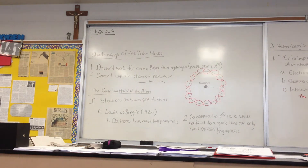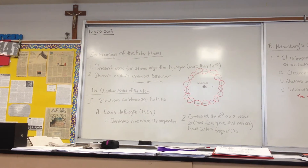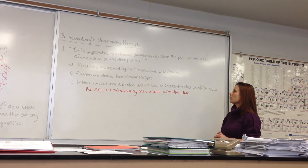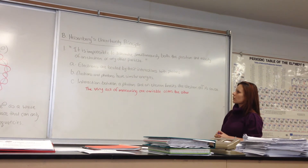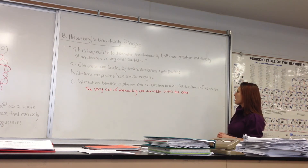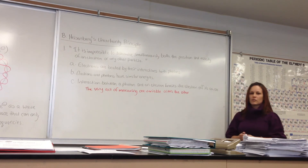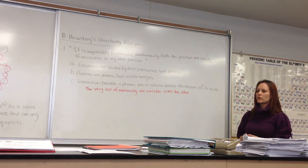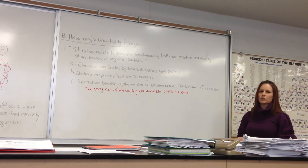The second scientist on quantum theory was Heisenberg. Heisenberg has a very famous uncertainty principle. His famous quote is that it is impossible to determine simultaneously both the position and velocity of an electron or any other particle. Electrons are located by their interactions with photons. Electrons and photons have similar energies, and interactions between a photon and an electron knocks the electron off of its course. The very act of measuring one variable — either the position or the velocity — alters the other. So we are unable to come up with any machinery or equipment that allows us to figure out the exact position or exact velocity of an electron.